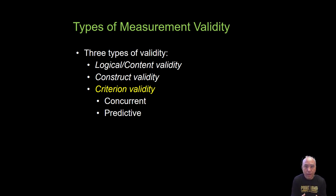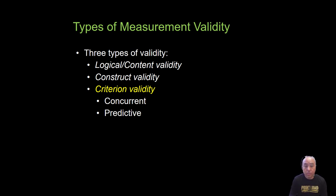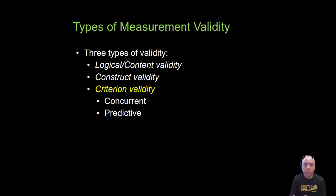Construct validity is somewhat abstract. The word 'construct' literally means a hypothesis, a theoretical construct. Construct validity is often used to describe the degree to which a test is able to measure the change in a variable that's unobservable, such as pain or function. For example, a visual analog scale (VAS) score used to measure pain level before and after icing — if it has good construct validity, it would accurately capture the change in pain from pre to post.